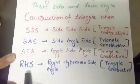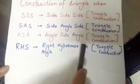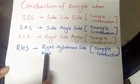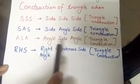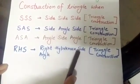And the fourth is RHS, right angle, hypotenuse, side. This construction is possible only in right angle triangle where we get right angle, hypotenuse and one of the side.